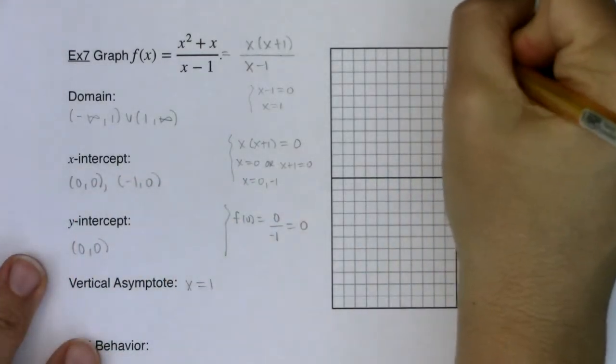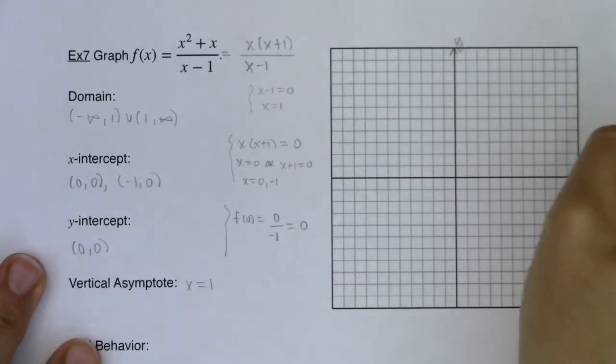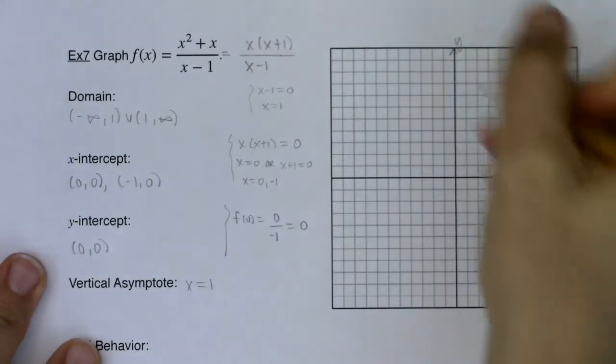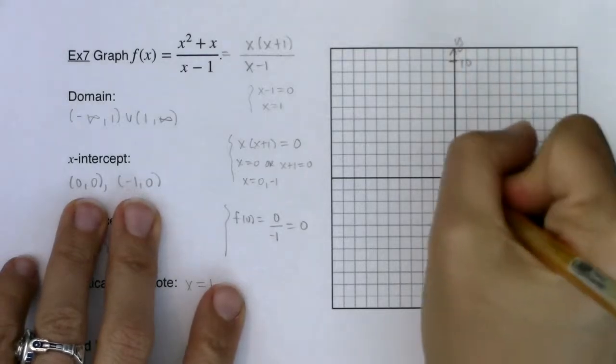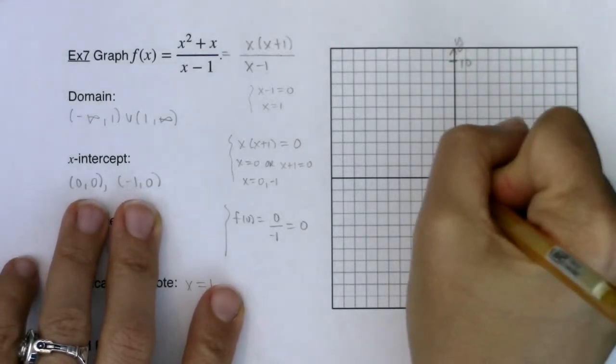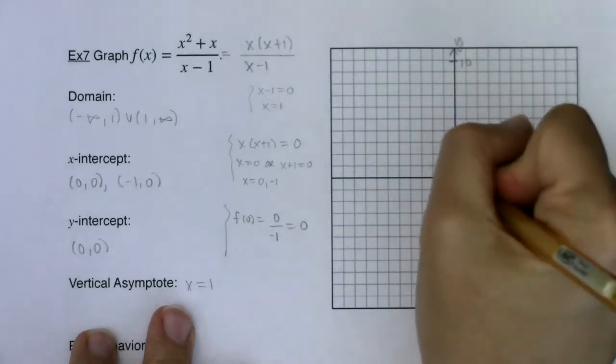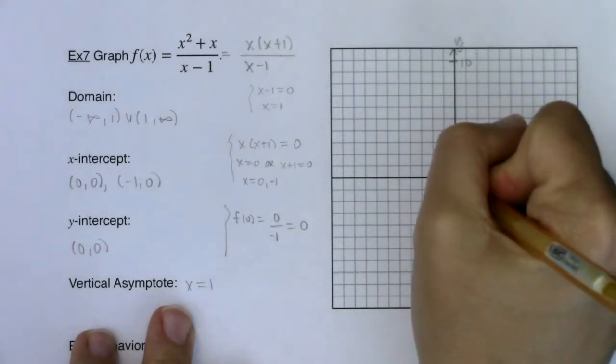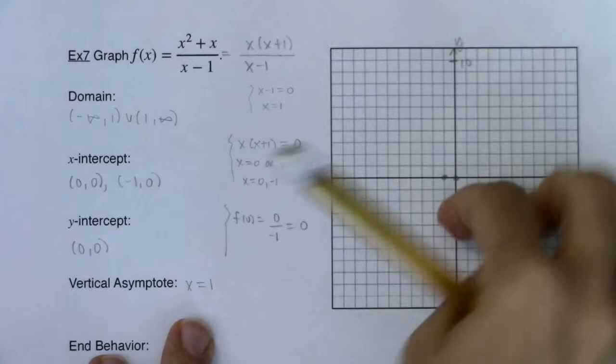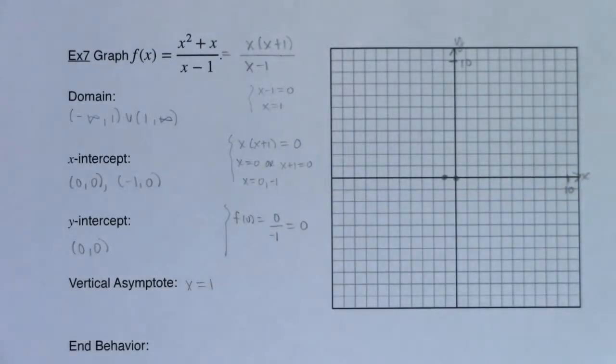Let me start putting this on my graph. All right so we got 10, 10. I had a zero at zero, this is going to be scrunched in. Negative one and then I have a vertical asymptote at x equaling one so let me get that in there.